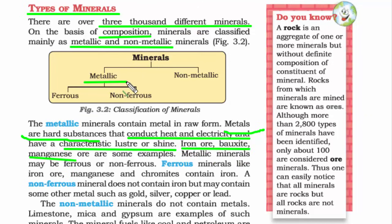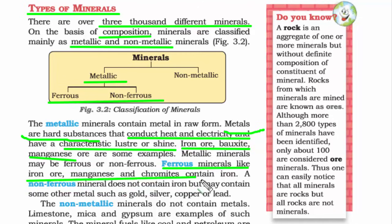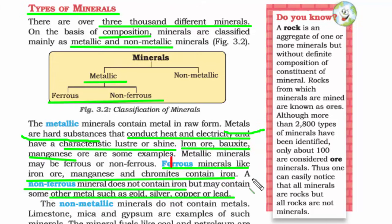Metals are further divided into two categories: ferrous and non-ferrous. Ferrous minerals contain iron — iron ore, manganese, and chromites. Looking at the first two letters of ferrous, 'Fe', which in the periodic table stands for iron, all ferrous minerals are essentially ores of iron. Non-ferrous minerals do not contain iron. Other metals such as gold, silver, copper, or lead are non-ferrous — you can twist and turn them with your hands.